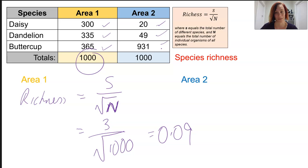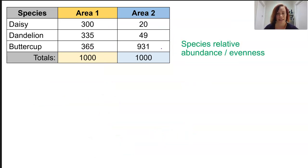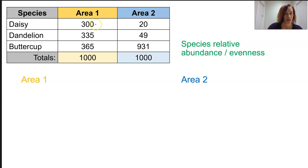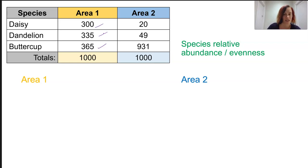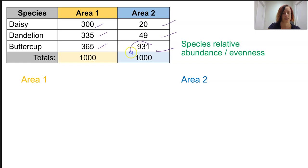So richness is useful, but it doesn't really tell us that much. If we start to consider evenness, we know that is going to consider more about which species might be dominating. In area one, we've got 300, 335 and 365. If we make that into percentages, that's roughly 30%, 33.5% and 36.5% — nice and even, with no one species dominating. If you look across to area two, however, we've got about 2%, about 5% and then about 93%. So we can see that the buttercup is dominating, giving us very different relative abundance in these two areas.